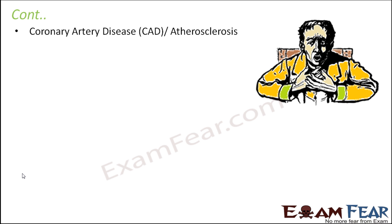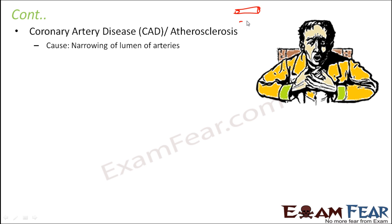Coronary artery disease, also known as atherosclerosis, is when the lumen of the arteries is narrowed down. Suppose arteries are tube-like structures — if these become too thin, blood components may not be able to travel through them properly, leading to inadequate blood supply to different parts of the body. A key symptom is chest pain, because without proper blood supply the heart cannot function properly.